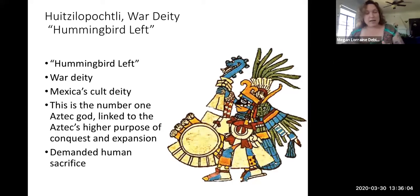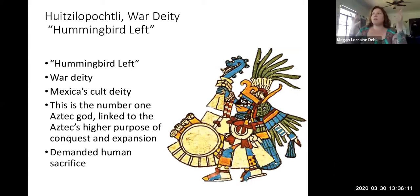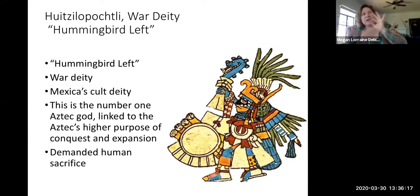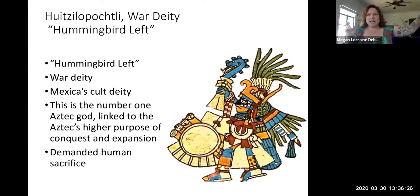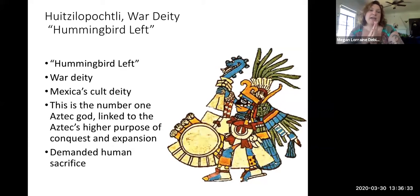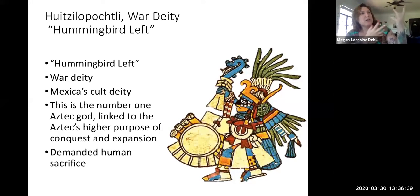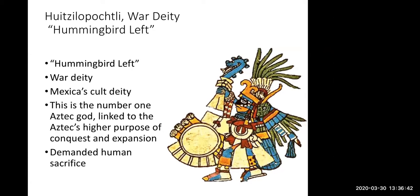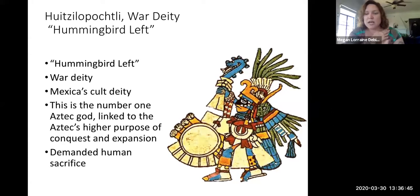His mother is distraught — 'You killed all my babies, what will I do without them?' And he says, 'Don't worry, I have a solution.' He takes the 400 brothers and throws them into the sky, and he takes the head of Coyolxauhqui and throws it up into the sky, making the moon. He makes the Milky Way galaxy — he makes the moon and the stars. He says, 'Mom, you can look up into the sky every night and see your daughter Coyolxauhqui in the moon, and all your sons in all the stars of the Milky Way galaxy.'